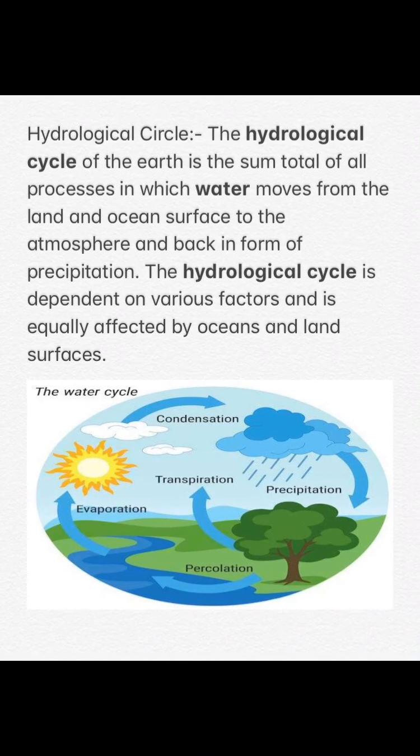First, we have the definition of the hydrological cycle. The hydrological cycle of the earth is the sum total of all processes in which water moves from the land and ocean surface to the atmosphere and back in the form of precipitation.